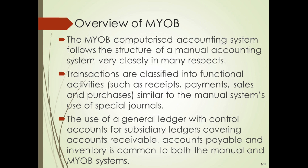The MYOB system follows the structure of manual accounting systems very closely in many respects. Transactions are classified into functional activities such as cash receipt, payment, sales and purchase, which are very similar to manual systems' use of special journals. The use of a general ledger with control accounts for subsidiary ledgers covering accounts receivable, accounts payable, and inventory is common to both the manual and MYOB systems.